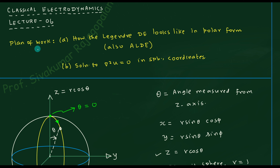Here is the plan for today's class. We are going to see how the Legendre differential equation will look in polar form — that means how theta is going to enter. The moment you say Legendre differential equation, you should also understand it goes along with the associated Legendre differential equation. The associated Legendre differential equation is the more general situation; you can always remove one term to bring it back to the Legendre differential equation.